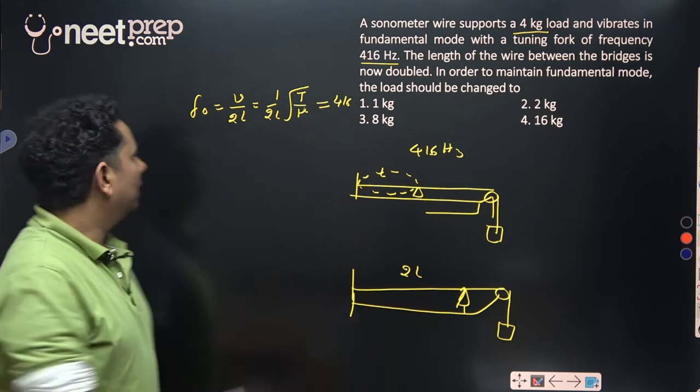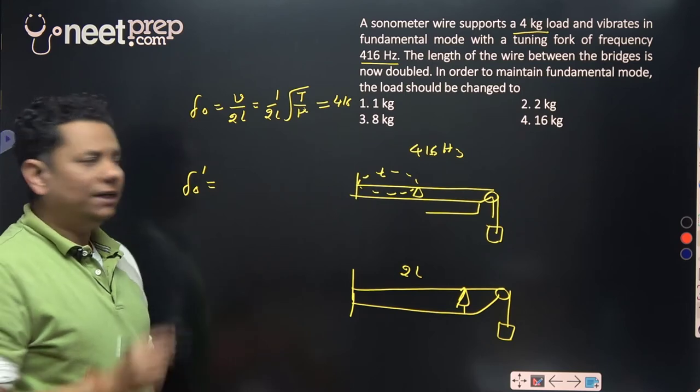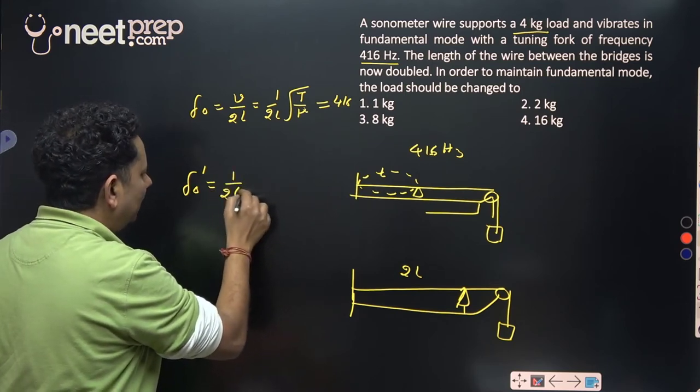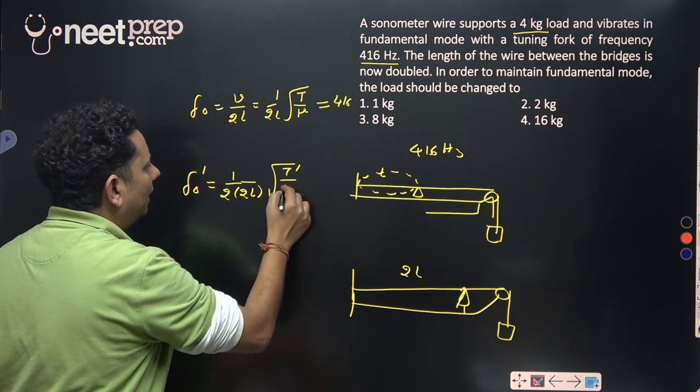Now in this scenario we have length doubled. So if we have f₀ dash equal to the exact same value, in this case we have the relation 1 by twice length 2L multiplied by square root of T dash by μ.